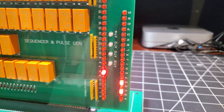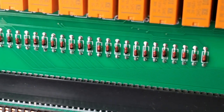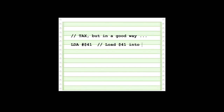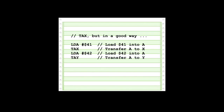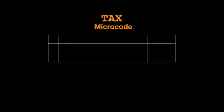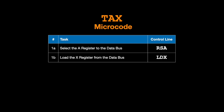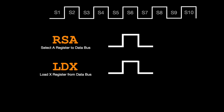Now that we have the sequencer working, it's time to catch up on the pulse generator, whose output is on the right and is driven by these diodes across the bottom of the card. We'll start with our code again and this time examine what happens when the TAX instruction is executed. The TAX instruction transfers whatever value is in the A register to the X register. This instruction, like every other one, requires hardware microcode that will activate control lines in the appropriate order. This view of the TAX microcode represents the timing of the control line activations needed. Note that both the RSA and LDX control lines need to be activated at the same time since we are transferring a value via the data bus. When step 6 of the sequencer is reached, the RSA and LDX lines are activated and they stay activated until the sequencer moves to the next step.